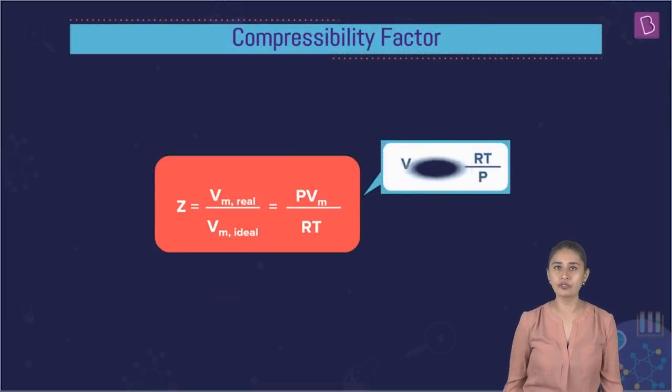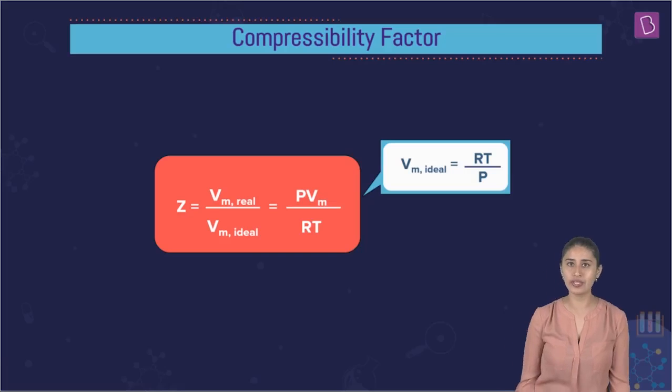Let's substitute. If we substitute the value of molar volume of the ideal gas, this is what we get: P into molar volume of the real gas divided by R into T. This is what is Z. The ratio of PVM, that is pressure into molar volume of the real gas divided by RT. This is the compressibility factor Z, or we can simply say molar volume of the real gas divided by the molar volume of the ideal gas.